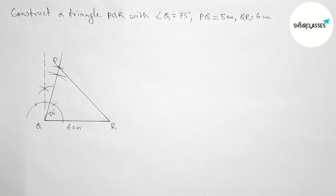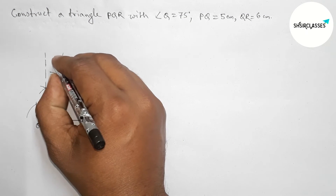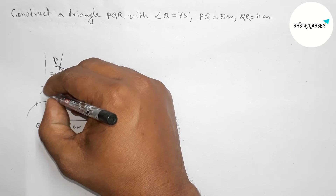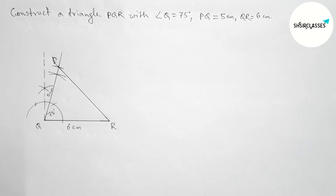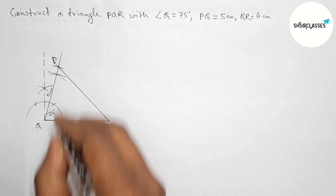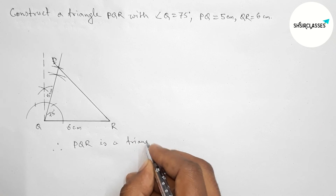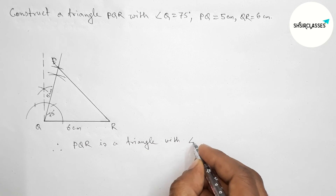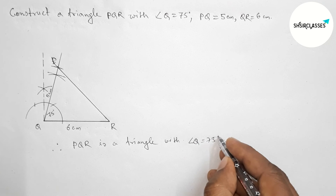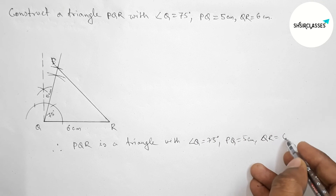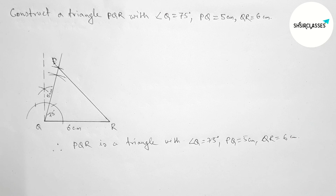Now joining P and R. So here this is point P, and the length PQ is 5 centimeters. We have got our required triangle PQR. Therefore, triangle PQR is constructed with angle Q equal to 75 degrees, side PQ equal to 5 centimeters, and side QR equal to 6 centimeters. That's all, thanks for watching.